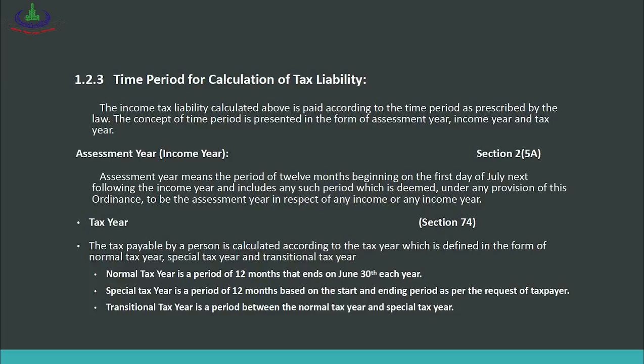The second is special tax year — for some businesses, the normal tax year doesn't suit them, so for example they want a tax year from January 1 to December 31. This is allowed and a special tax year is allotted. Number three is transitional tax year, which is the period between the normal tax year and special tax year. When you are moving from a normal tax year to a special tax year, the period in between — perhaps 2, 3, or 4 months — is called the transitional tax year.